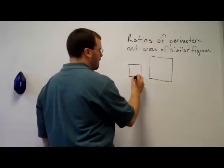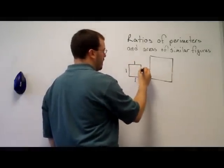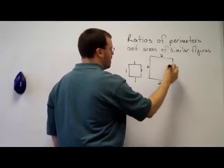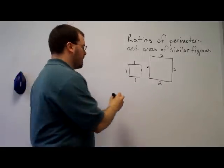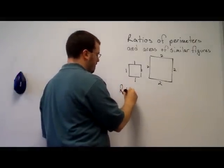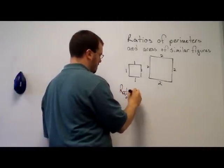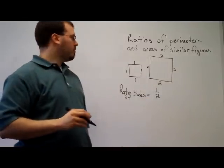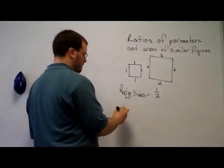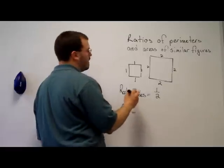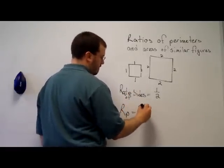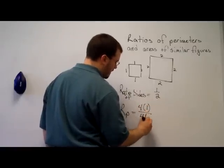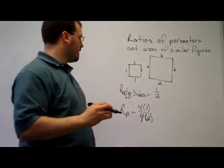So if we have a square with side length 1 and another square with side length 2, we can easily calculate the ratio of the corresponding sides is 1 to 2. The perimeters, the ratio of the perimeters would be 4 times 1, or the perimeter of the smaller square, over 4 times 2, the perimeter of the larger square.